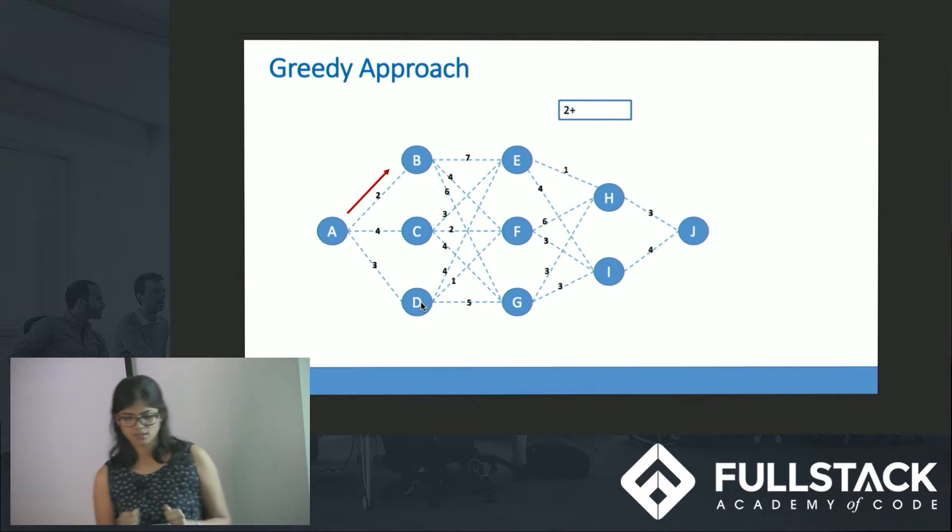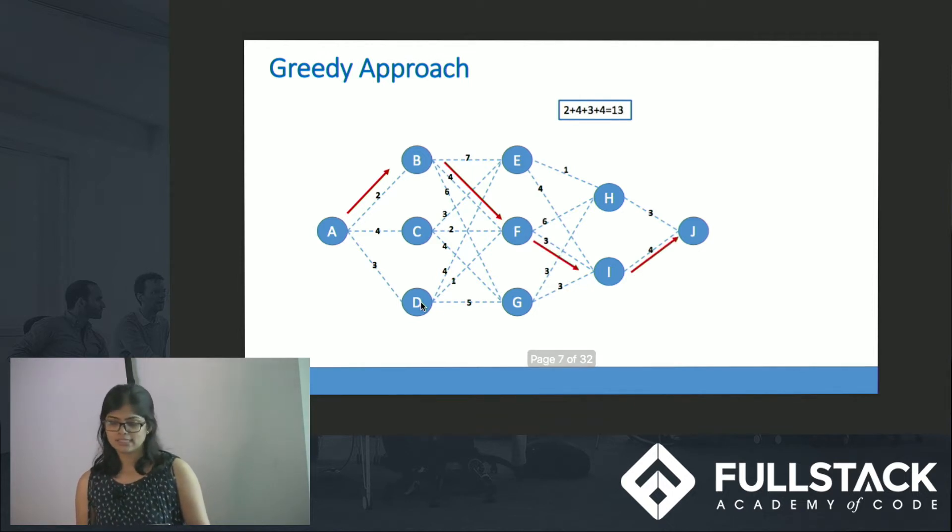In this graph I am trying to find a shortest path from A to J. The greedy algorithm selects A to B because that is the shortest which is having an edge weight of 2, then it selects B to F, F to I and I to J, resulting in a shortest path from A to J being 13.